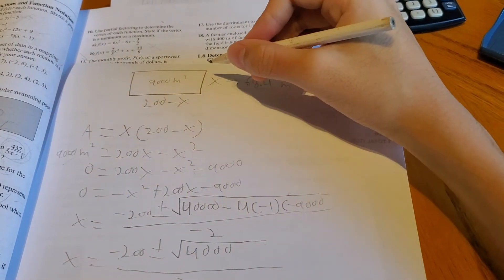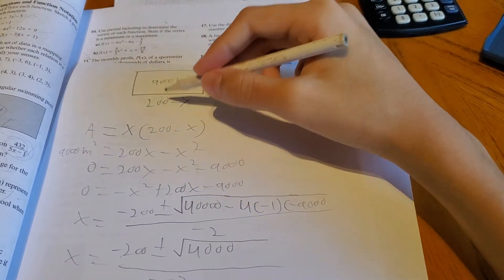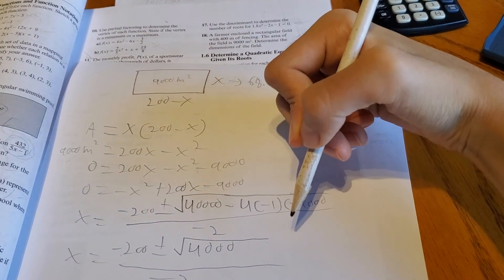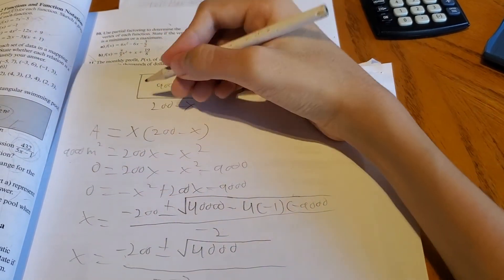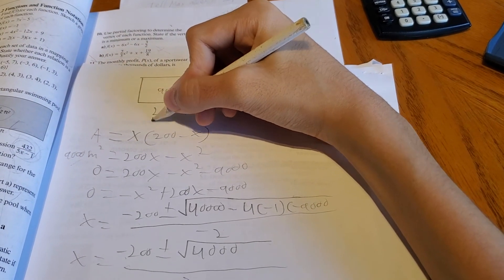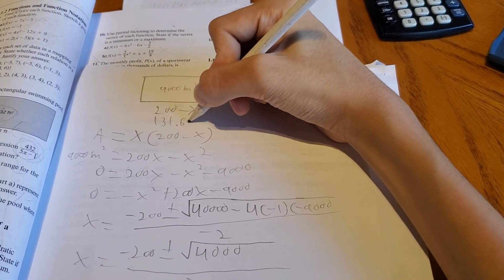And the length, longer side, which is 200 minus 68.4 meters, which is 131.6 meters.